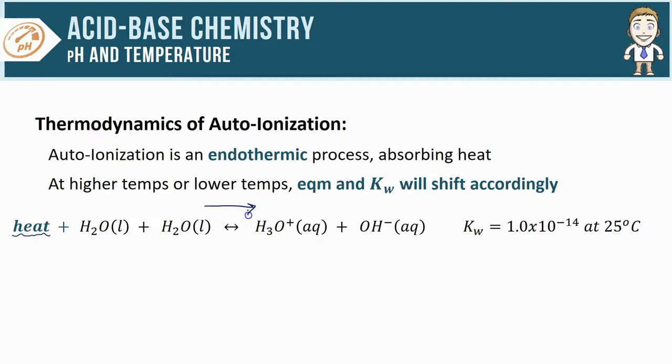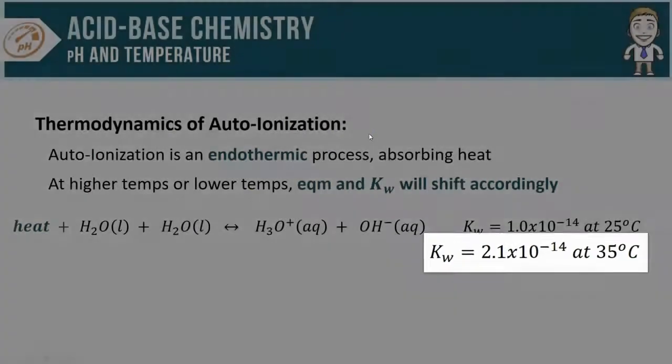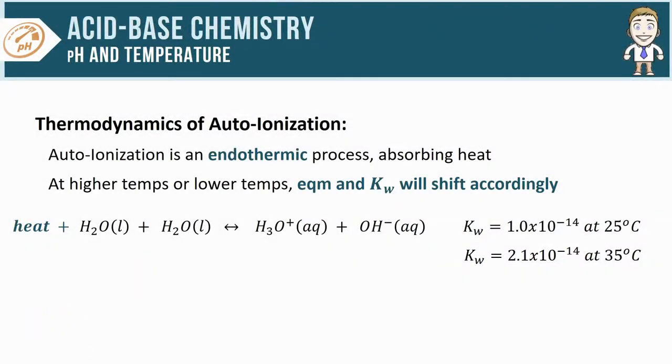Since a temperature change is taking place, that's also going to change the very value of K. The increase in product concentration will cause the K value to increase, which is why if you look up the Kw value at, say, 35°C (a higher temp), we have shifted to the right and increased our Kw to about 2.1 × 10^-14.